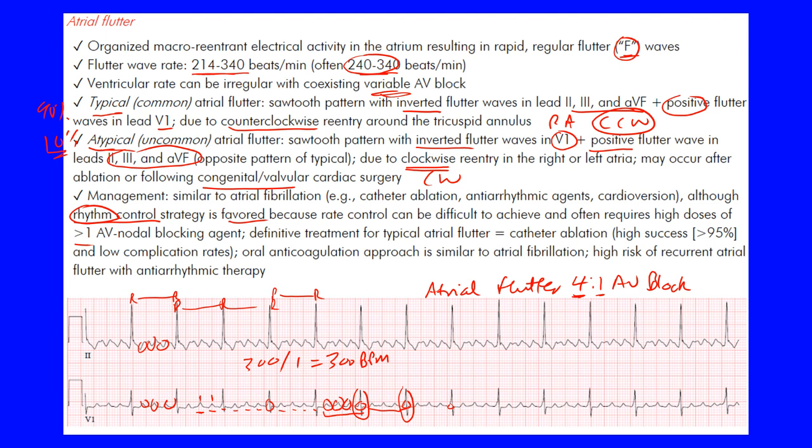Because of the difficulty with rate control, rhythm control is preferred when achievable. Definitive treatment for typical atrial flutter is catheter ablation, which has a success rate over 95% with low complications — so early ablation is preferred. These patients are at risk for stroke and therefore require oral anticoagulation, similar to AFib patients. Anti-arrhythmic therapy carries a high risk of recurrent flutter.